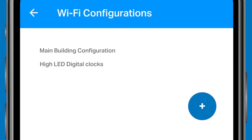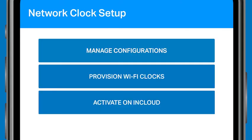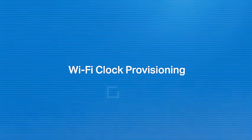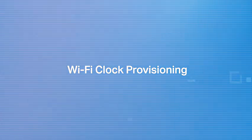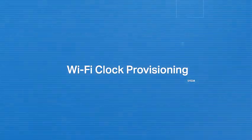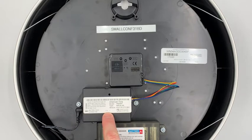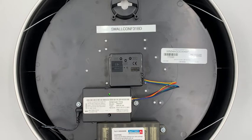Tap the back arrow to return to the home screen. To continue setting up your Wi-Fi clocks, you'll need to power them up and put them into provisioning mode. For analog clocks, hold down the button on the Wi-Fi receiver until you see a single orange flash from the LED, then release the button. The LED will flash green and orange, indicating the provisioning mode is active.